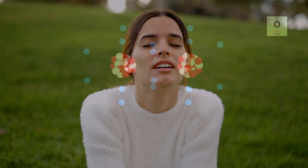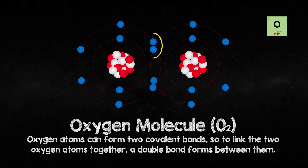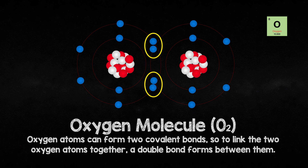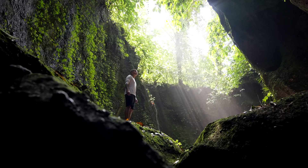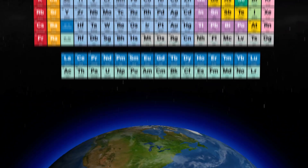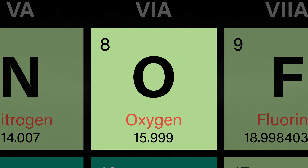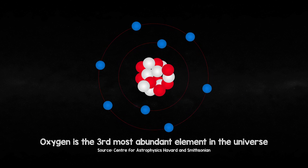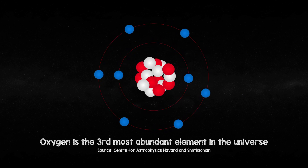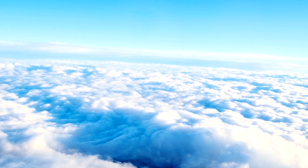We breathe O2, a molecule consisting of two oxygen atoms that are covalently bonded together. It's essential for life. But hundreds of kilometres above us in the ionosphere, you'll find single atoms of oxygen. Oxygen is the third most abundant element in the universe, after hydrogen and helium, and is the second most abundant gas in the atmosphere.